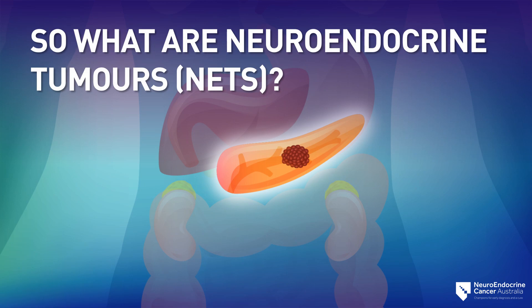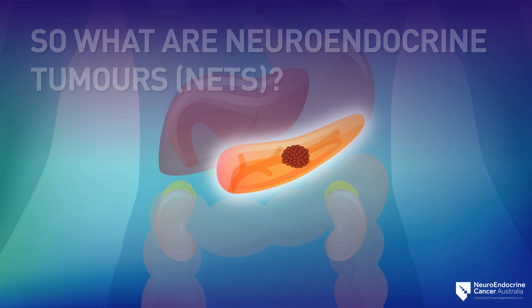Like other cancers, neuroendocrine tumours, or NETs, start when something goes wrong within the DNA of cells — in this case, in the neuroendocrine cells. As mentioned before, these cells are spread throughout the body. In contrast to normal cells, cancer cells don't stop growing and dividing. This uncontrolled cell growth results in the formation of a tumour.